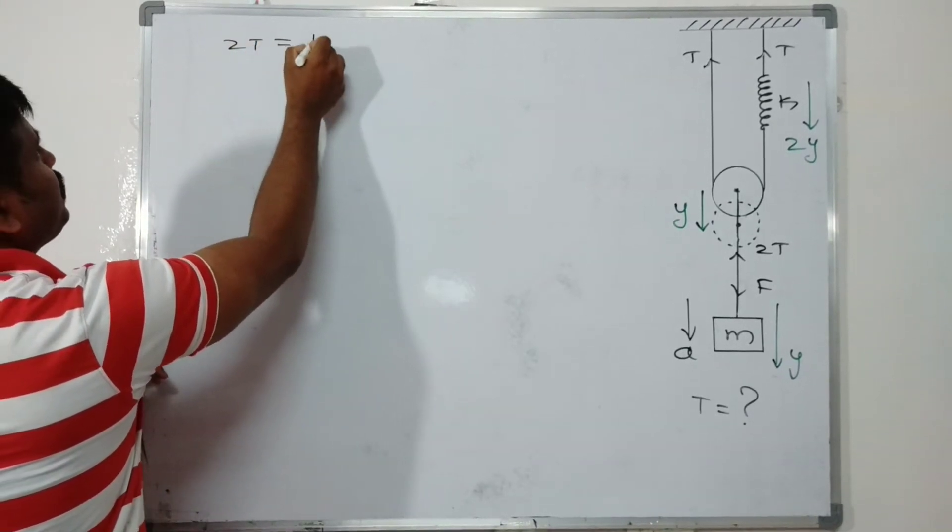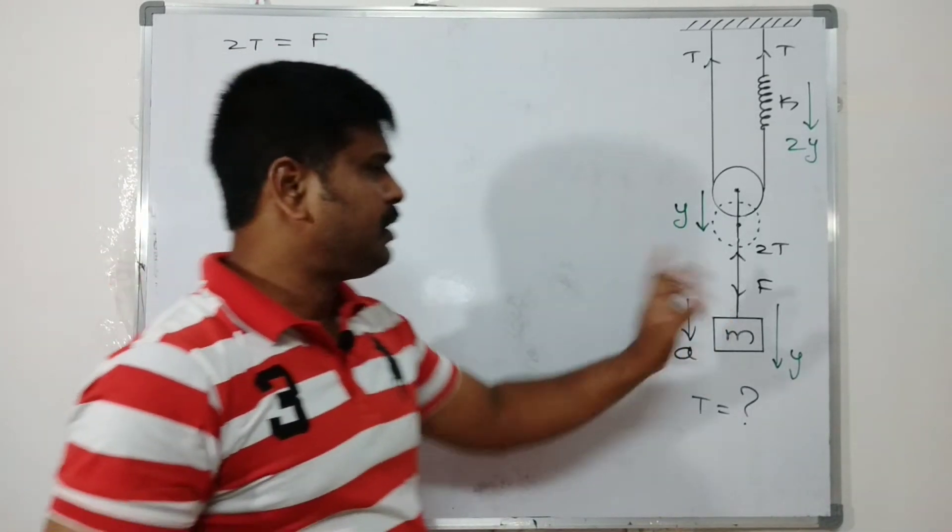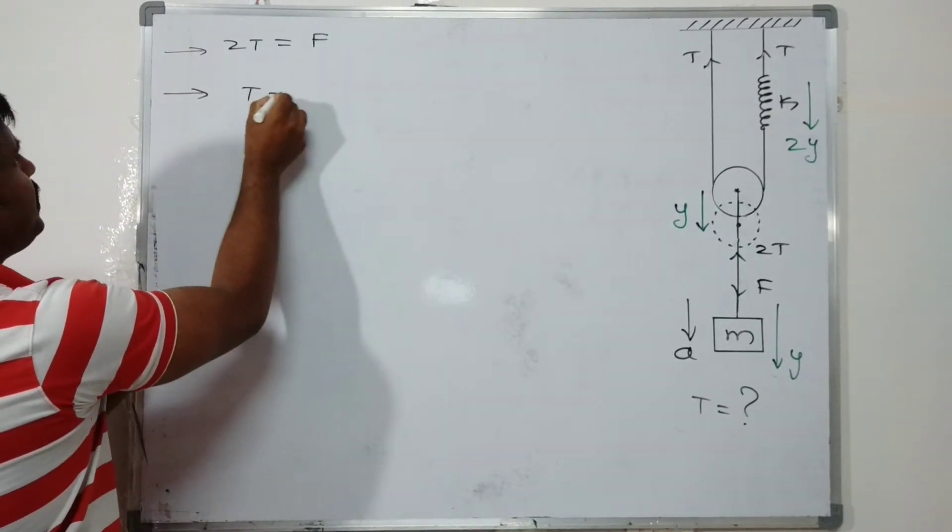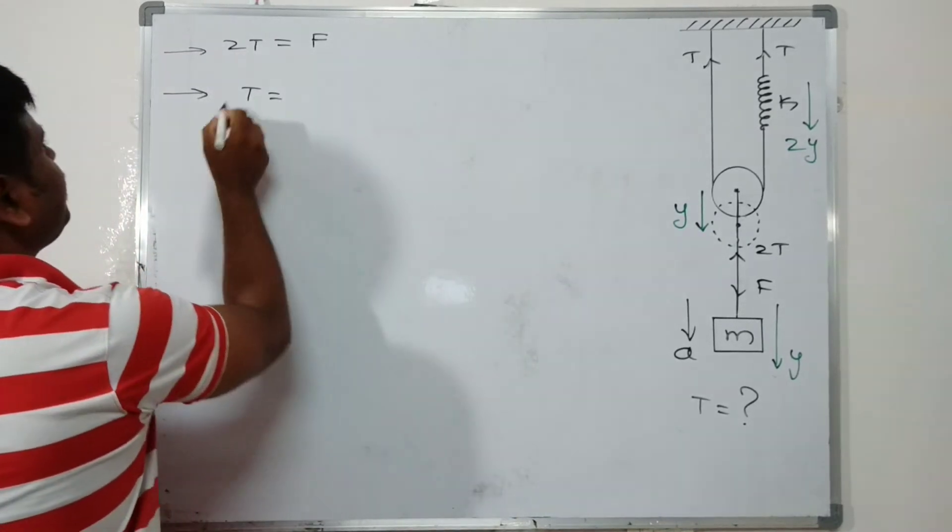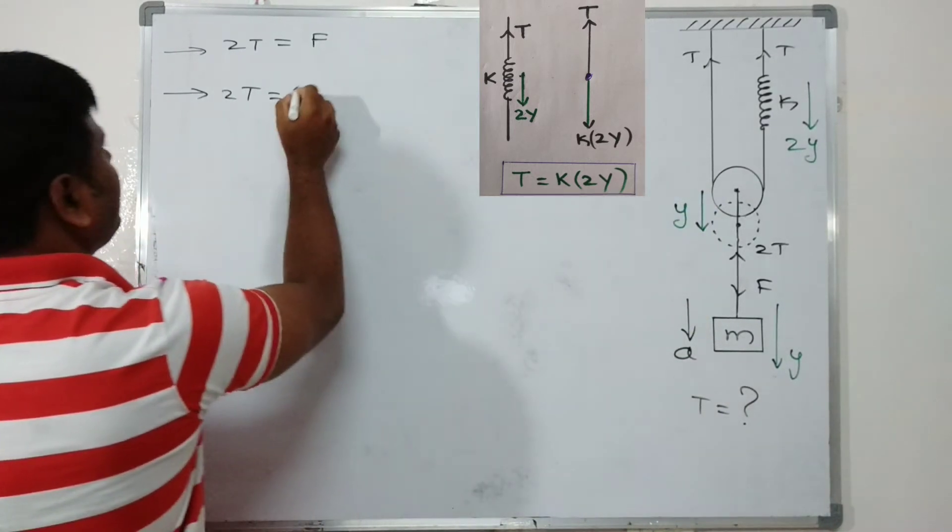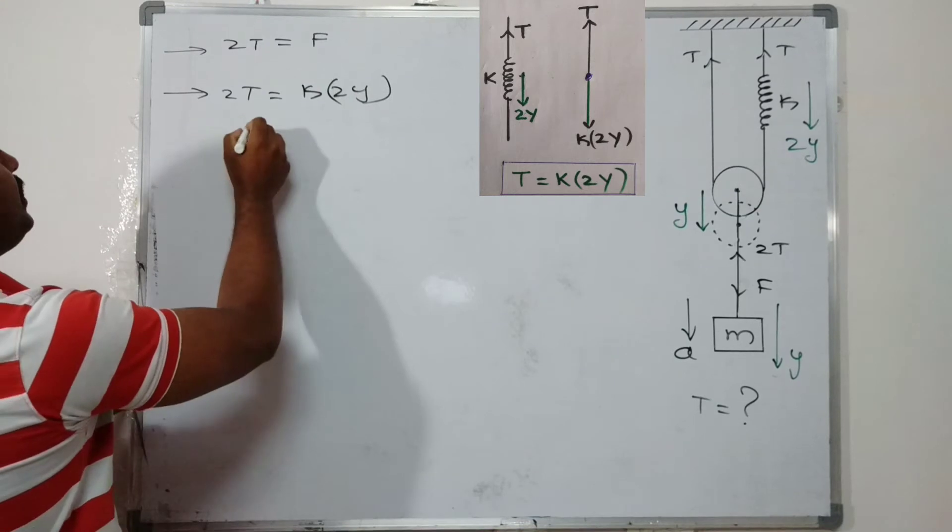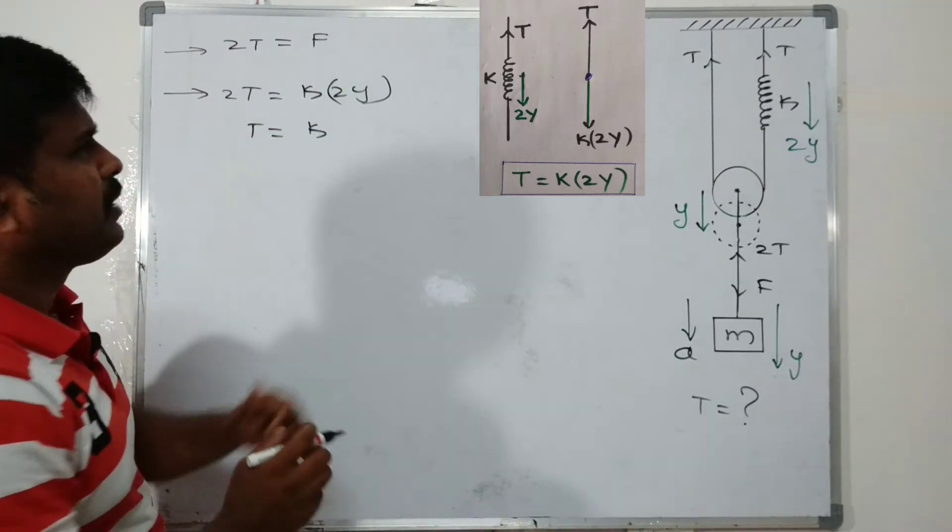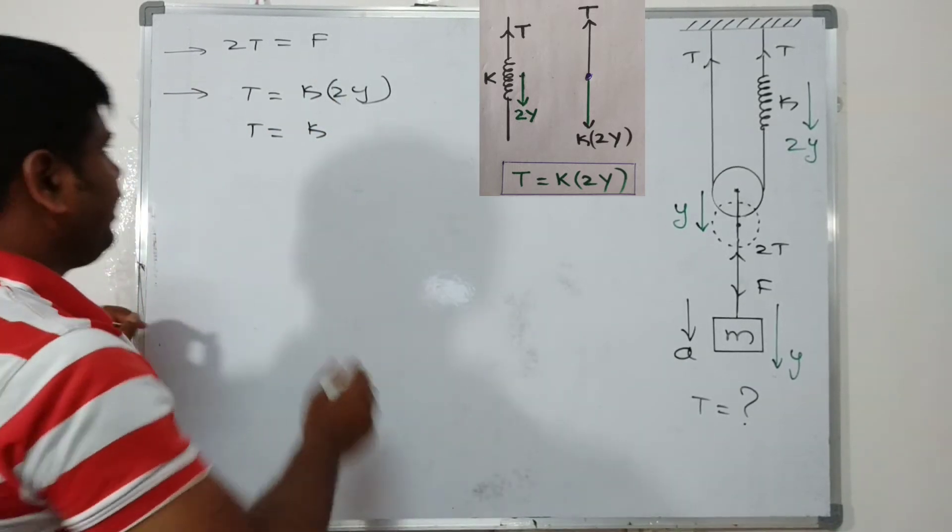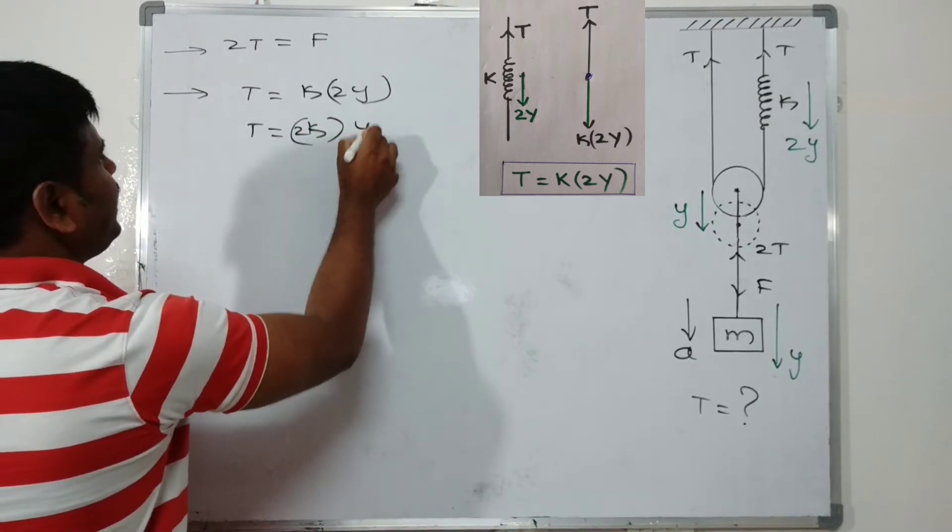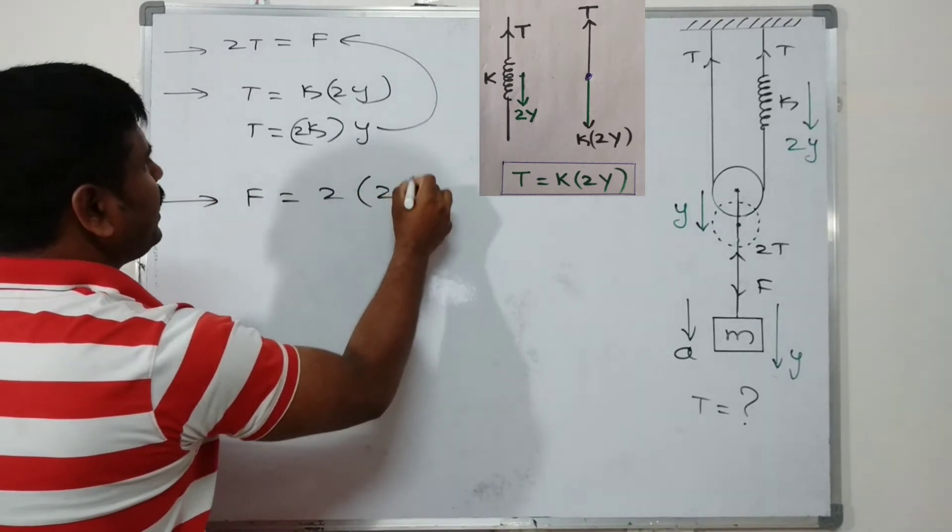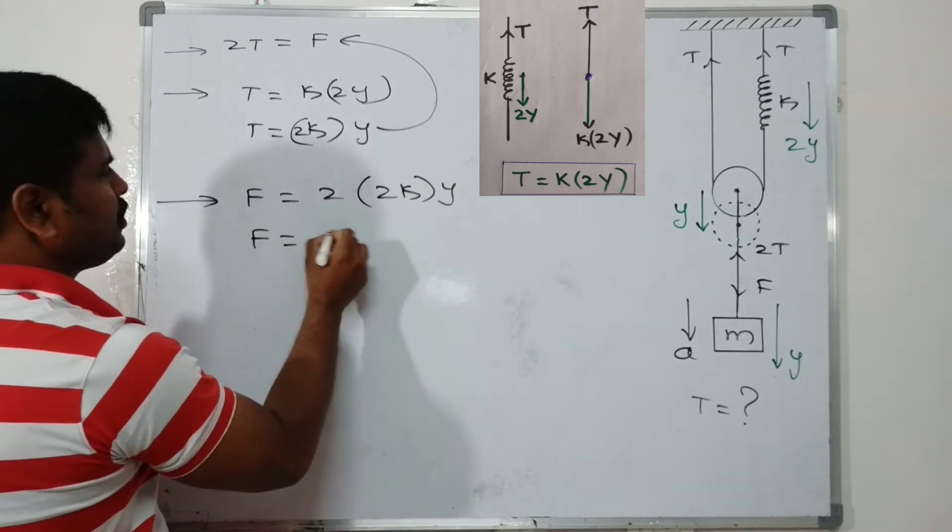First, 2T = F. So T = F/2. But 2T = k × 2y, therefore T = ky. Wait, so T = 2ky actually. This value T is replaced in the above equation, so F = 2 × T = 2 × 2ky. Therefore F = 4ky.